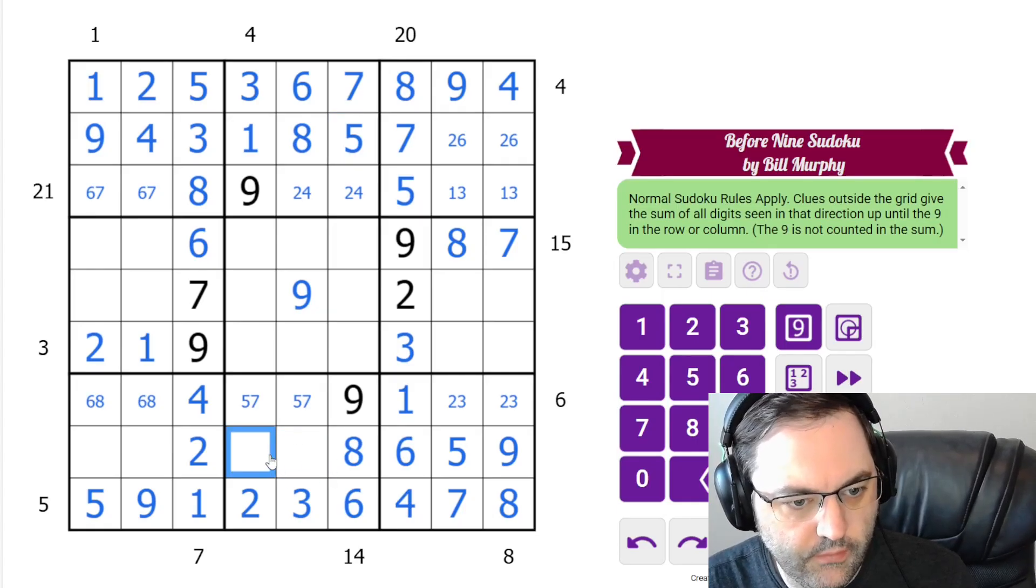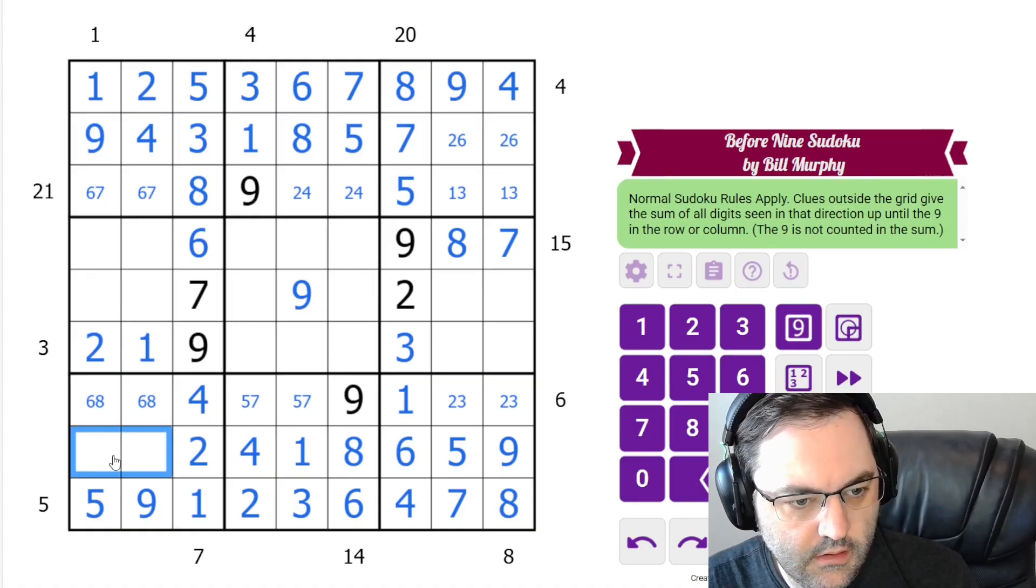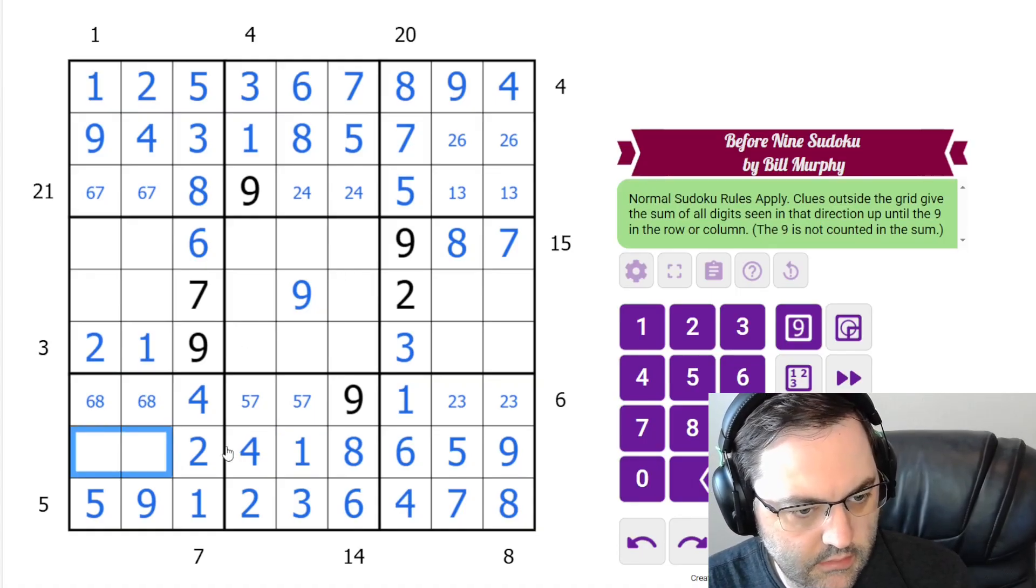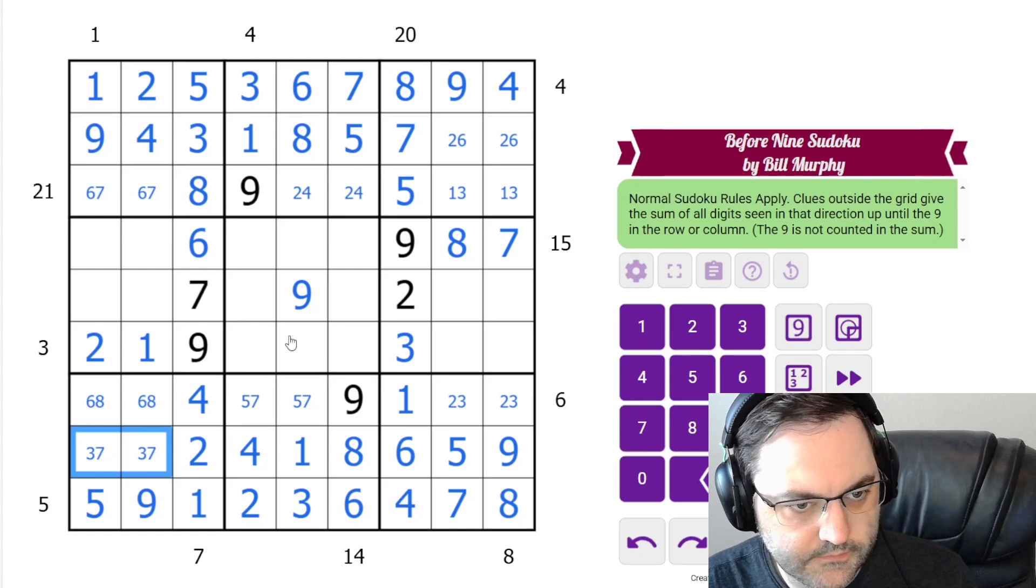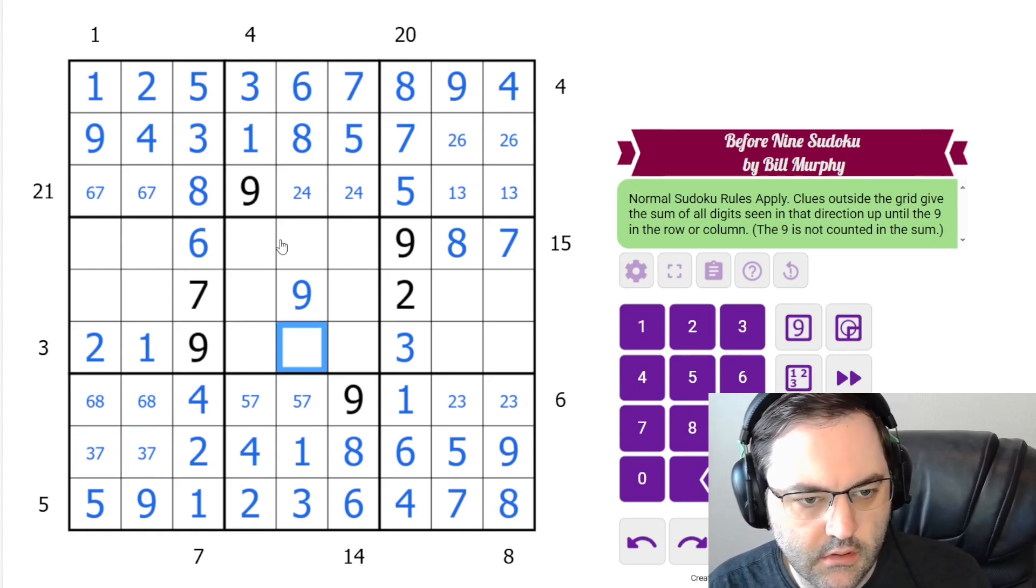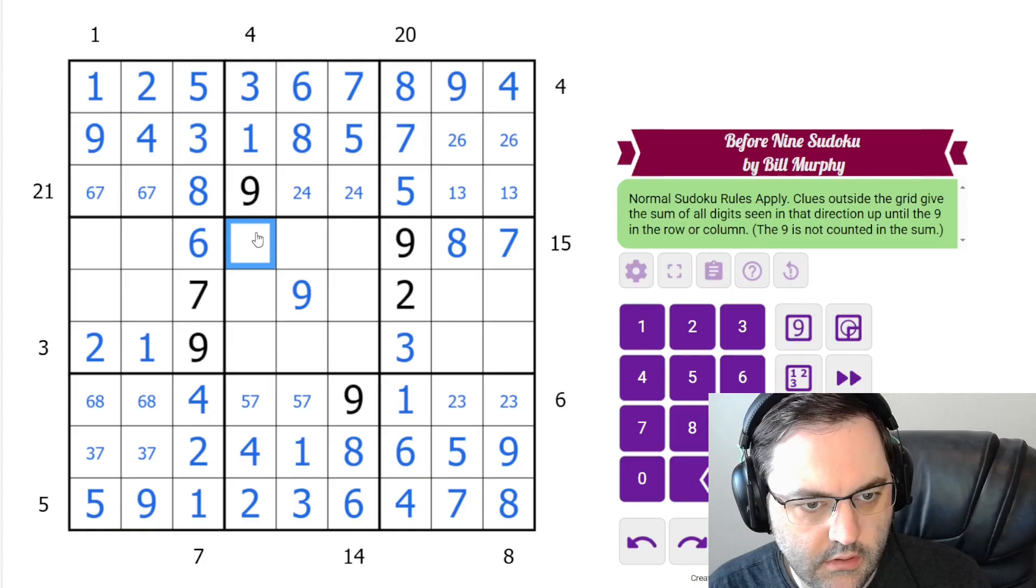Down here, these are 1, 4. Also resolved. These are 2, 7. All right. Let's look. 6 is an 8. Can't go in any of those cells.